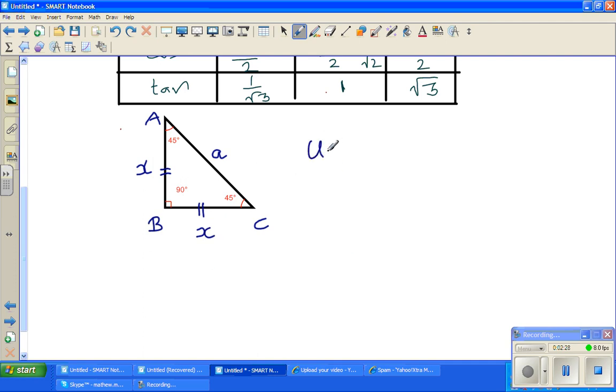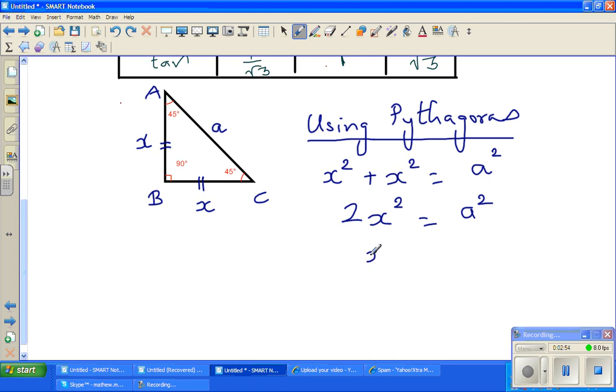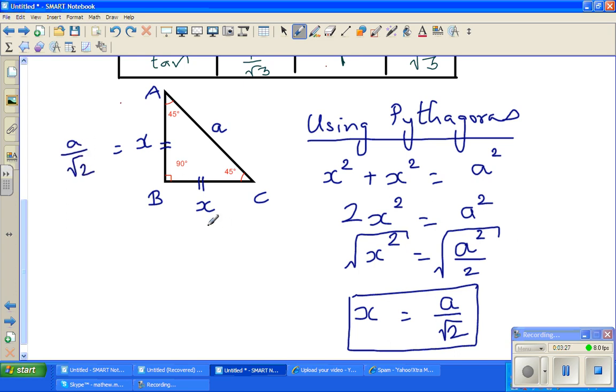Now using Pythagoras theorem, x squared plus x squared equals a squared. So 2x squared equals a squared. If you divide both sides by 2, x squared is a squared over 2. If you take the square root of both sides, x equals a over root 2. And this side is also a over root 2.